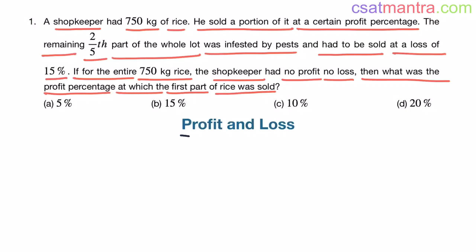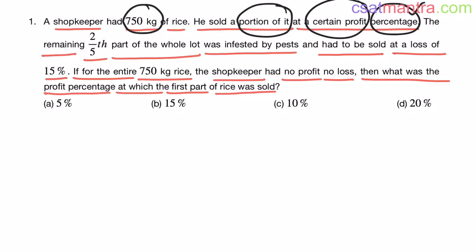This question is from profit and loss chapter. In this problem, if you see, we are only concerned about percentages. We have 750 kg of rice. Shopkeeper sold a portion of it at a certain profit percentage. We are talking in terms of percentage here. And the remaining part was sold at a loss of 15%. Again, we are talking in terms of percentage here.